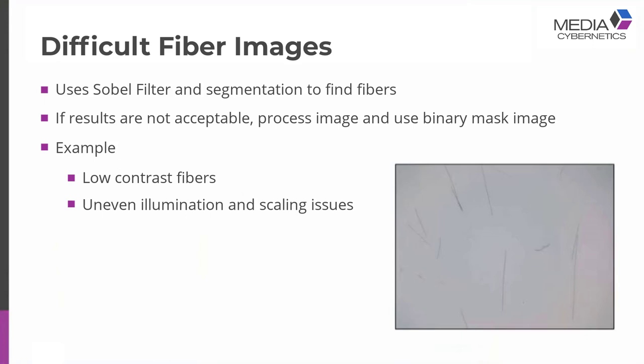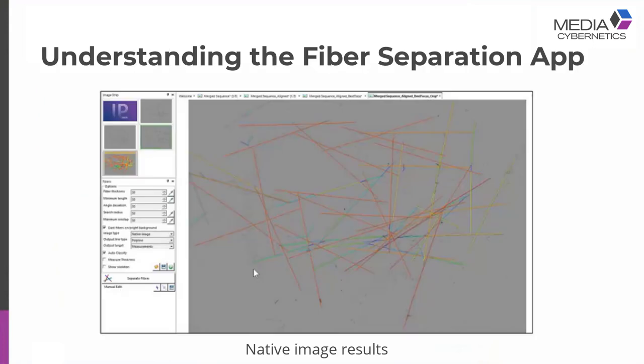If you get into a situation where you can clearly tell it's not picking up the fiber, you can use a little bit of image processing — whether it's a flatten filter, count size, or some other filter — to help bring the fiber up from the background and use that as an input. Running the app with default settings, it's not too badly picking up a lot of these carbon fibers, but it's totally missing some areas. Looking at the image more closely, there's some uneven illumination — fibers are blending into the background with not much difference in gray level.